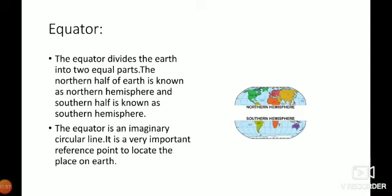The equator is an imaginary circular line. It is a very important reference point to locate places on the earth. Because to find any place, having latitude is very necessary. And equator is the largest latitude.